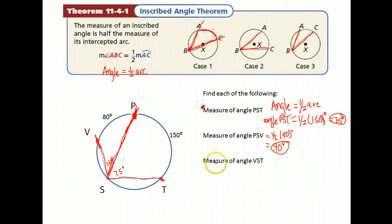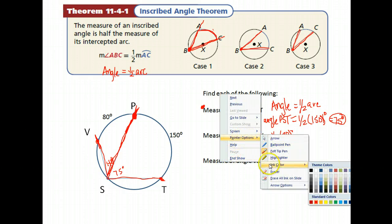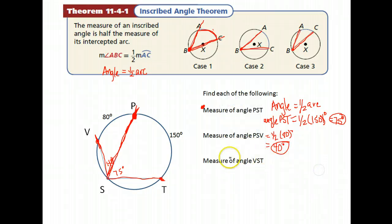Next, they want the measure of angle VST. I'm going to change colors of ink real fast here. V, S, T. So again, I like to trace my angle. So we're going from V down to S, out to T. Angle VST. What is its measure? Well, if we had started from the very beginning, we would have had to do some work. And notice angle VST is these two angles we have put together. By the angle addition postulate, we can add them to get the whole angle.